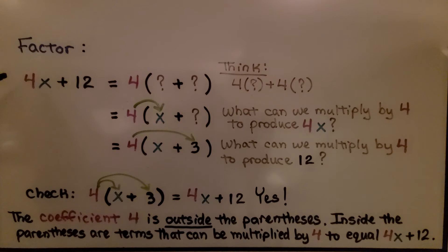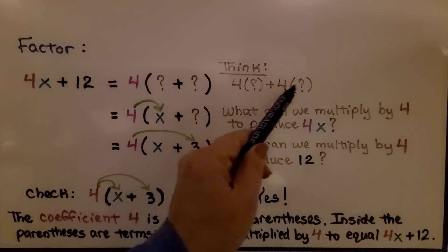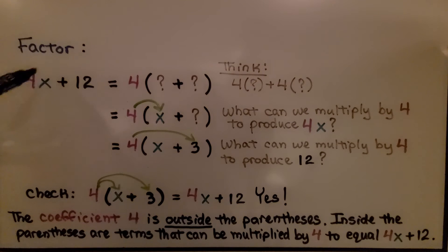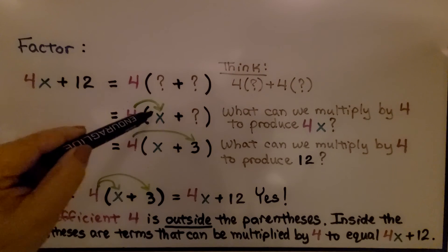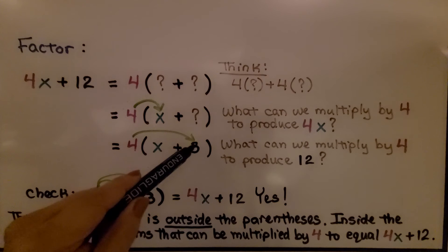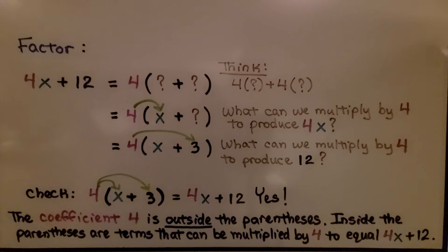Here we're going to factor 4x plus 12. We think 4 times something plus 4 times something, because we're undoing the distributive property. We have 4x, so we can put an x inside the parentheses. We need 4 times something that equals 12—we could put a 3 here. What can we multiply by 4 to produce 12? We check it using the distributive property: 4x plus 4 times 3 is 12. It's our original expression, so yes. The coefficient 4 is outside the parentheses, and inside are terms that can be multiplied by 4 to equal 4x plus 12.